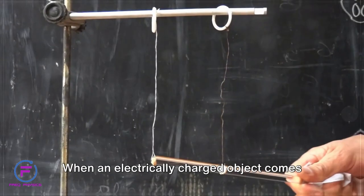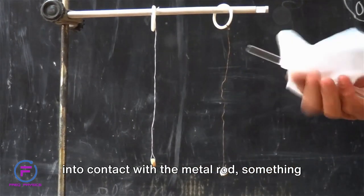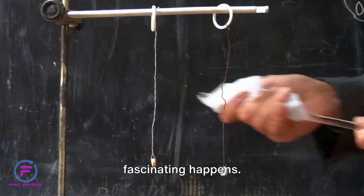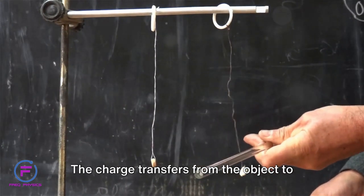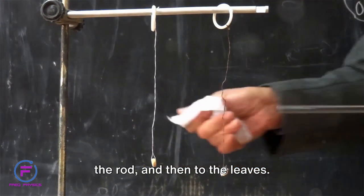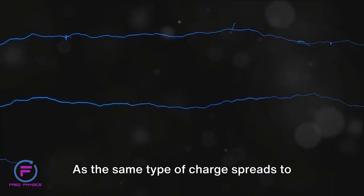When an electrically charged object comes into contact with the metal rod, something fascinating happens. The charge transfers from the object to the rod and then to the leaves. As the same type of charge spreads to each leaf, they begin to repel each other.